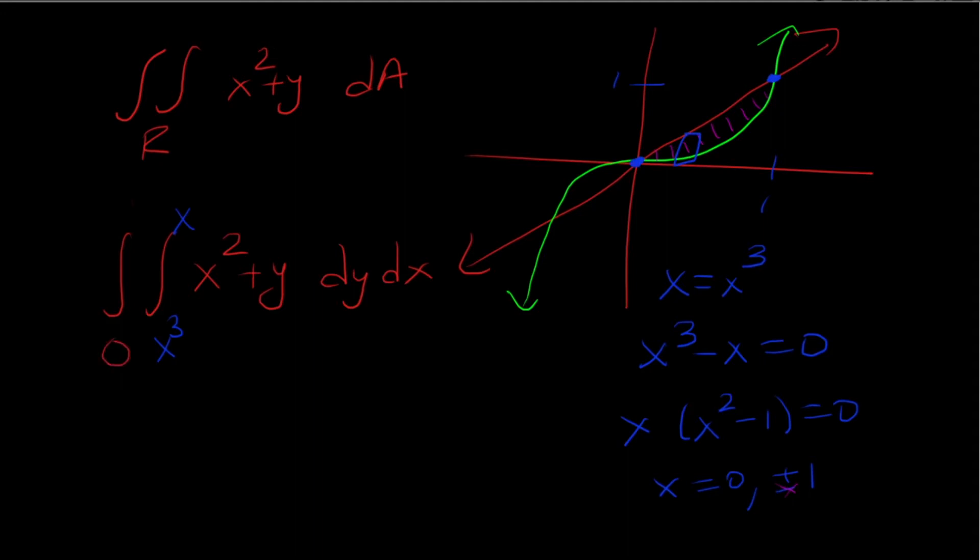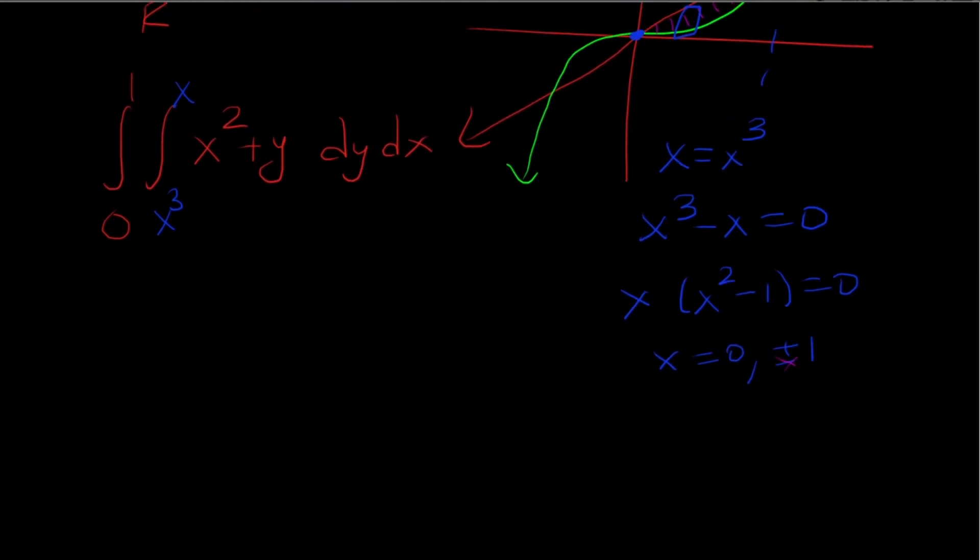So now y values go from 0 to 1 and let's integrate. First we're doing with respect to y. X squared is a constant so we're going to put in y in front and then it's going to be y squared over 2 from x cubed to x, and then we're going to take another integral from 0 to 1 with respect to x.